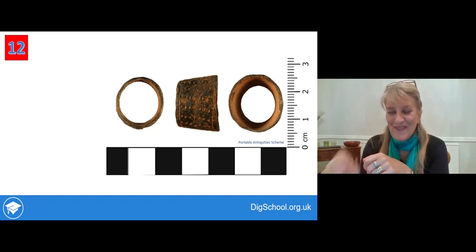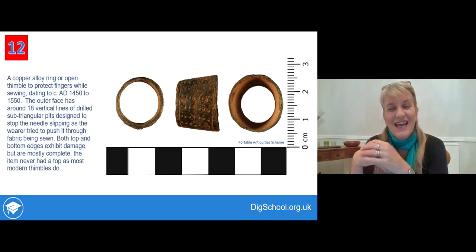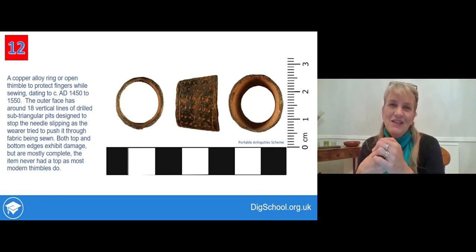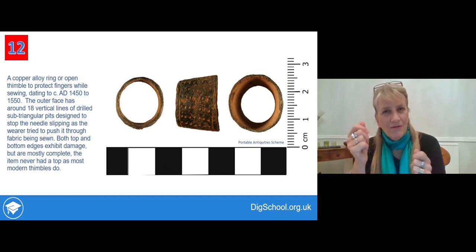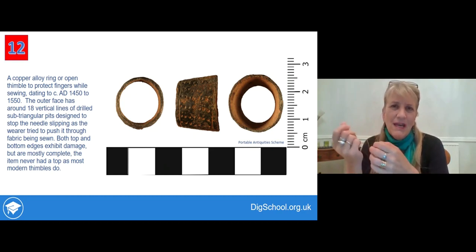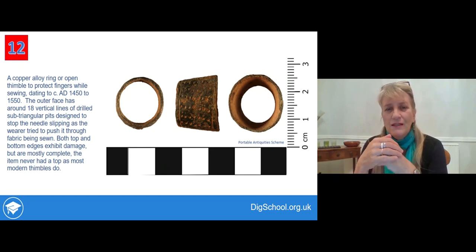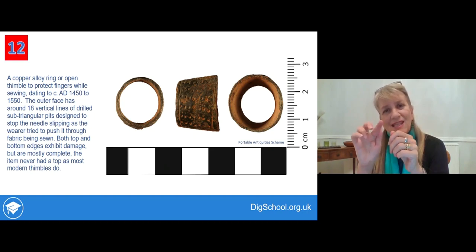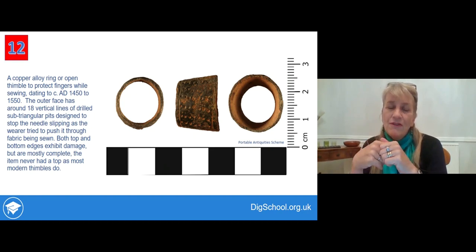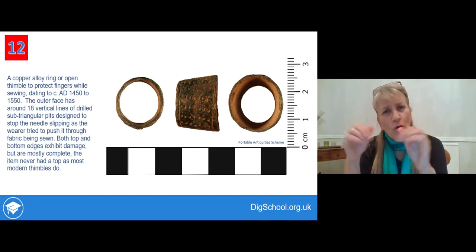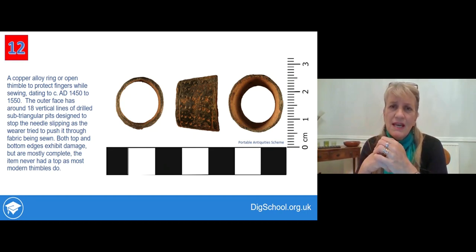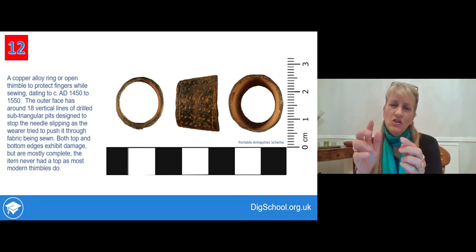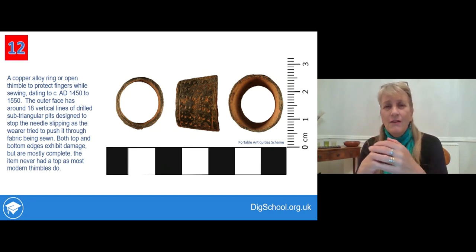I wonder what you made of this item. It's actually a copper alloy open thimble used to protect your fingers while you're sewing cloth. Needles are very pointed — they have to be at both ends so they go through the cloth without damaging it, but that can prick your fingers. The outer face has little dots in it to help stop the needle slipping around the surface of the thimble. It has no top to it — usually thimbles today have a top — but because you're using the side of your finger to push the needle through, you don't really need one.